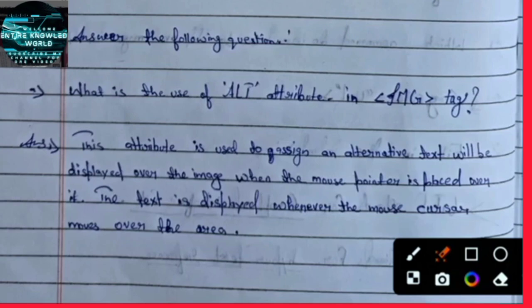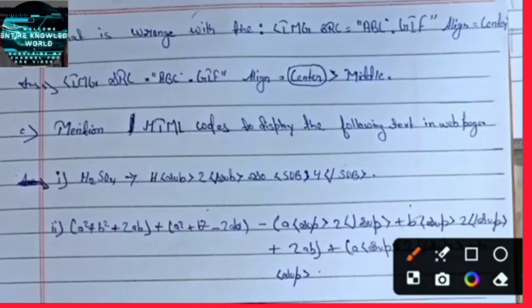आगे question देखते हैं। B number में यहां पे देख सकते हैं, यह answer है। तो center के जगह पे हम middle use कर सकते हैं। यहां पे यह दिखा रहा है किसमें wrong है, तो यहां पे यह wrong को write किया गया है।